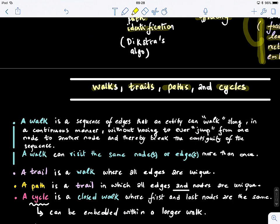What is a walk? A walk is a sequence of edges that an entity can walk along in a continuous manner without having to jump from one node to another node. You're not allowed to break the sequence, so the sequence should be continuous. An important thing about a walk is that you can visit the same nodes or edges more than once.